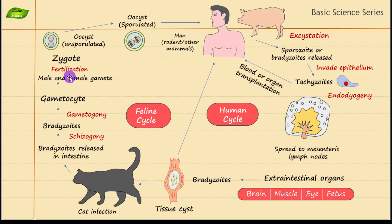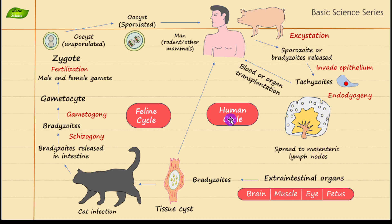Tachyzoites then convert into bradyzoites, which are part of the tissue cyst. In the cat, tissue cysts are converted into gametocytes, fertilization of male and female gametes occurs, forming the zygote, and from the zygote the unsporulated oocyst is produced, which then becomes the sporulated cyst. Toxoplasma gondii thus has two discrete parts to its life cycle: the human cycle and the feline cycle.